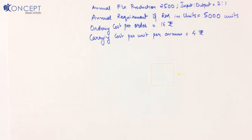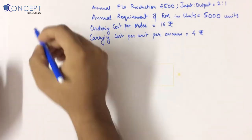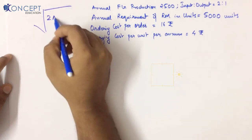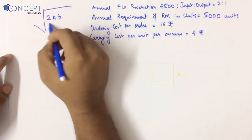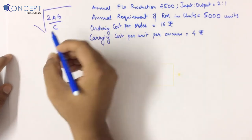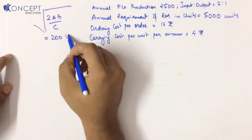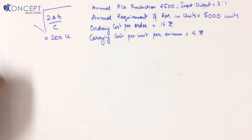We came to know that 200 is the quantity, either by the ranker's approach or by the formula approach. We have known that our formula to derive is 2AB by C, and that formula has answered us that we need to order 200 units.